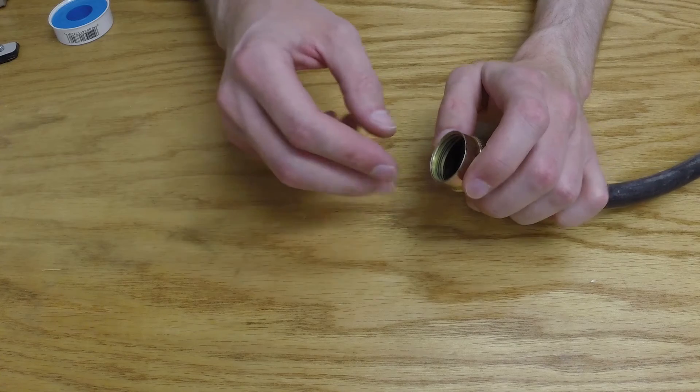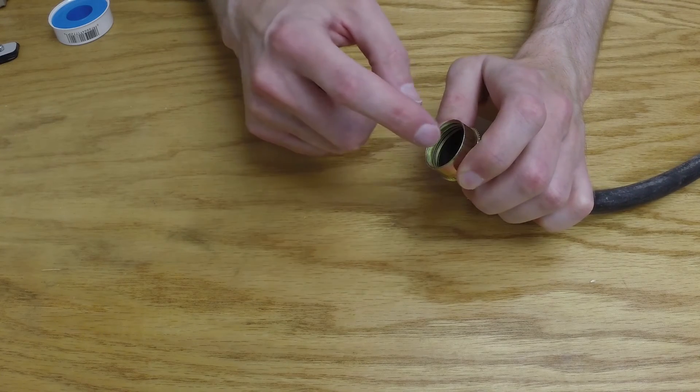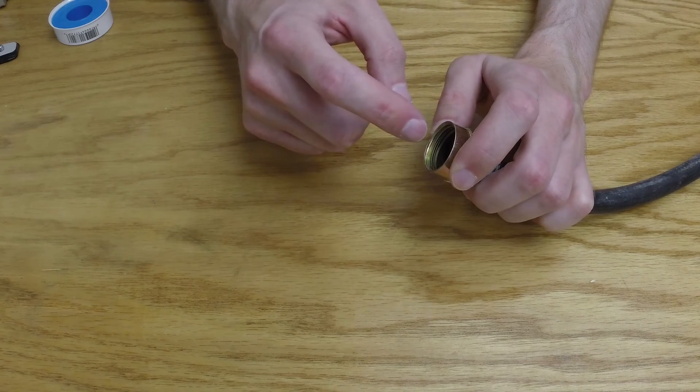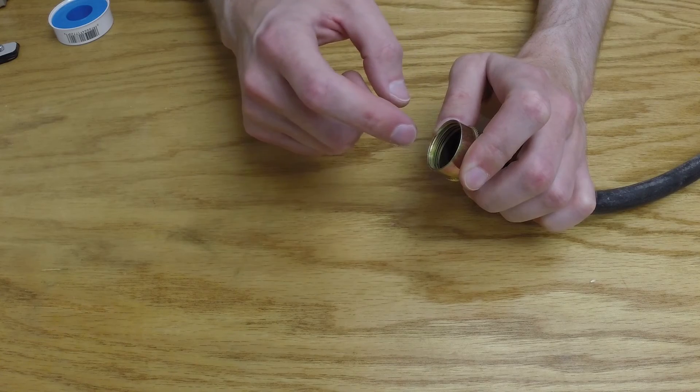Two gaskets is not twice as good. If either gasket fails, the surfaces will leak. In addition, the threads have a certain length of engagement.